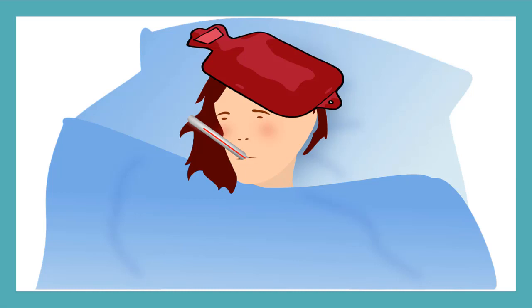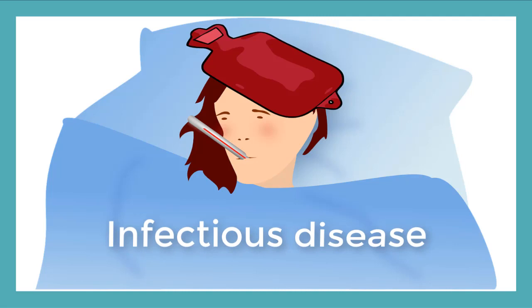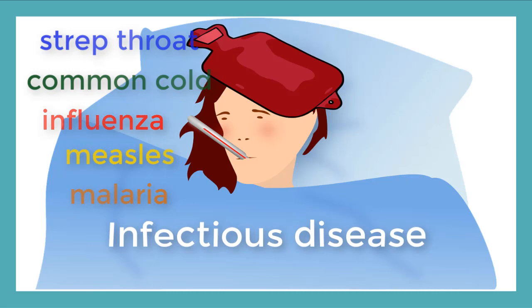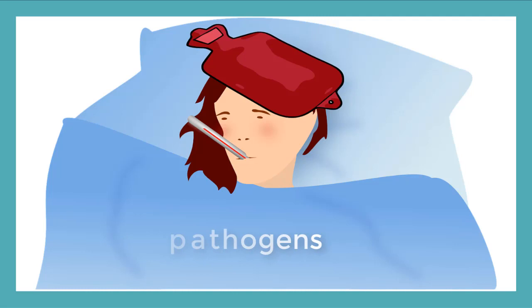When a person is infected with a pathogen, they have what's called an infectious disease. Some of these infectious diseases caused by pathogens might be familiar to you: influenza or the flu, the common cold, measles, strep throat, and malaria are all infectious diseases caused by different types of pathogens. And while all those diseases infect humans, pathogens can also make animals and plants sick too. But in this lesson we will only talk about humans.